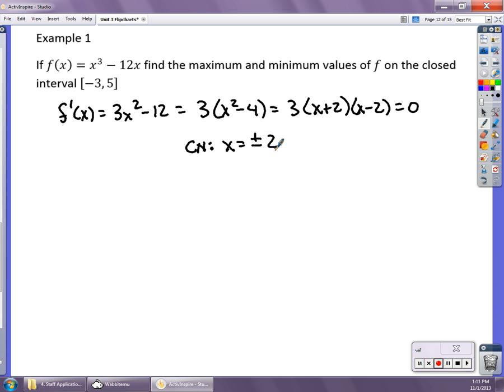And then that identifies your critical numbers as x equals plus or minus 2. I'm then going to notice that I'm on the interval between -3 and 5, so I have to calculate the endpoints. So I'm going to calculate f(-3), and I got that to be 9. I calculated f(5), and I got that to be 65.